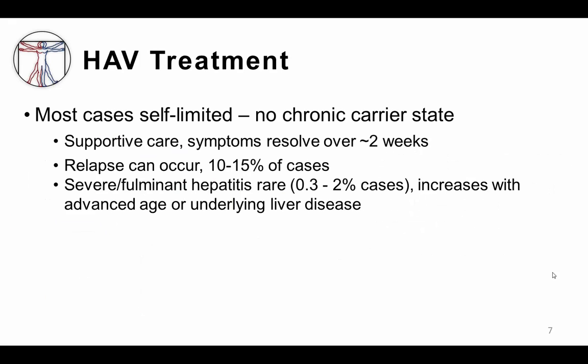Hepatitis A is thankfully a self-limited disease. There are no chronic infected carrier states and the treatment is usually supportive care. Patients who recover from hepatitis A are typically immune for life thanks to the anti-hepatitis A IgG antibodies. Unfortunately, some relapses can occur, usually within the first six months after the initial infection.